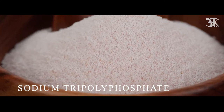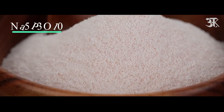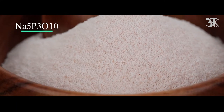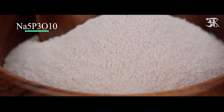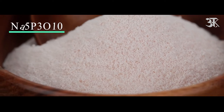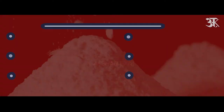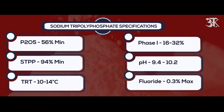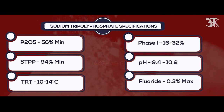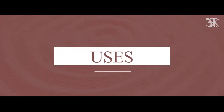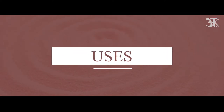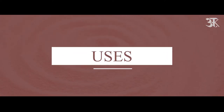The chemical formula of sodium tripolyphosphate is Na₅P₃O₁₀. Now we will look into the uses of sodium tripolyphosphate.